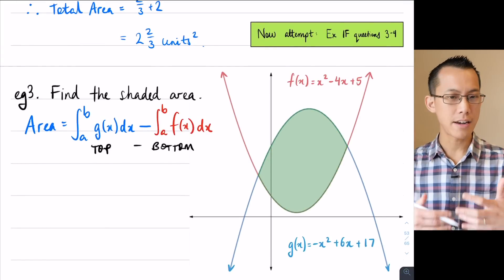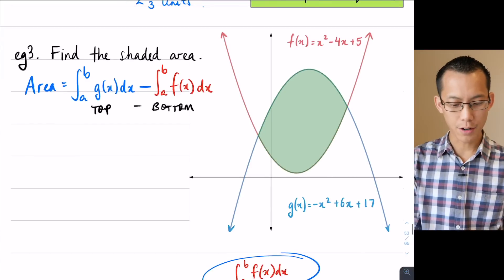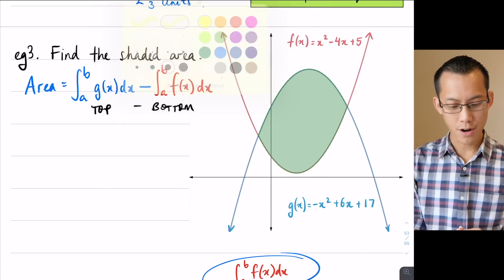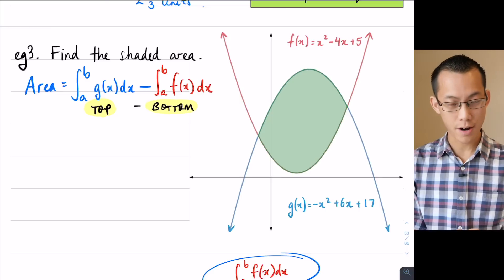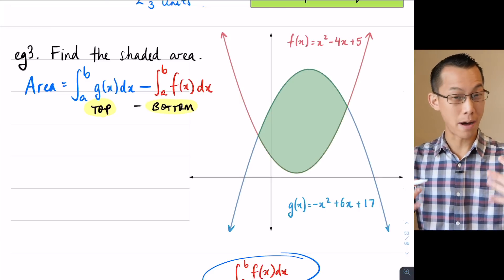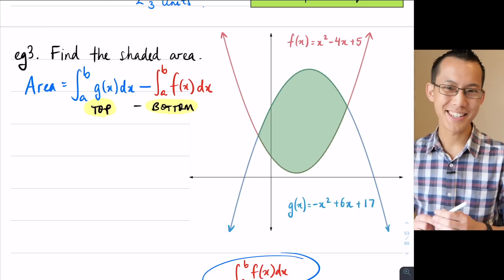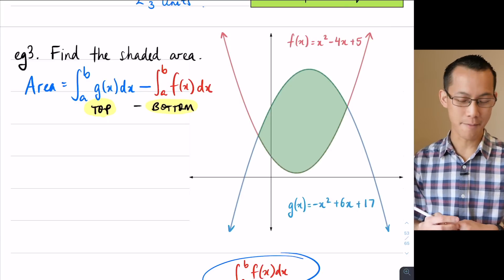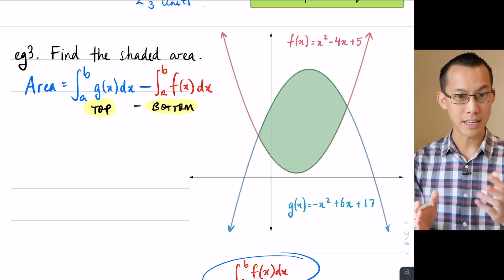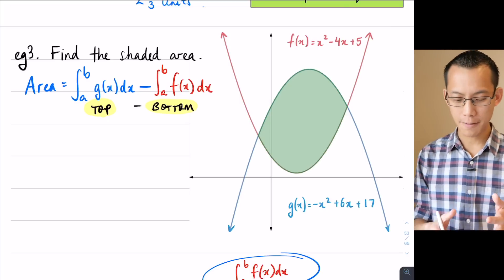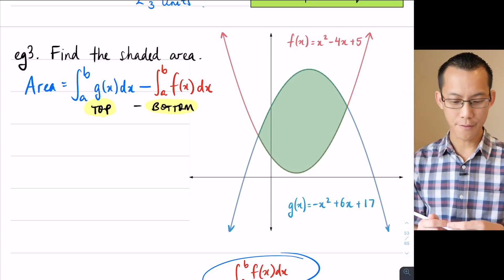I've got my general idea here to find an area between two curves. I'm going to work out the area of the top one and then subtract the area of the bottom one. That's the overall path through this question. Now I need to knuckle down and get the details. I need to know where a and b are, for instance. Where are those start points and end points? And then I'm going to substitute in g of x take away f of x.